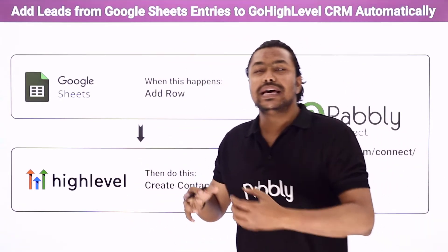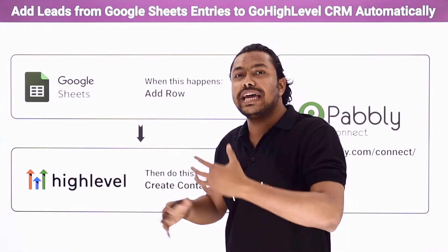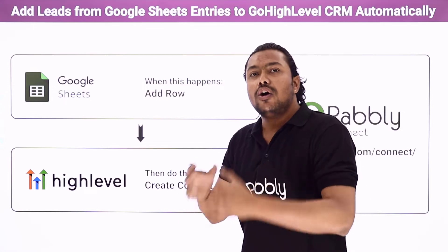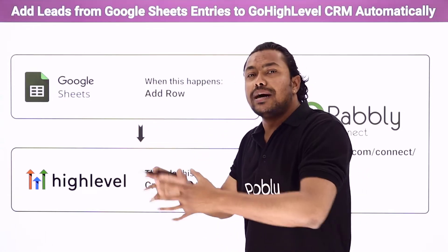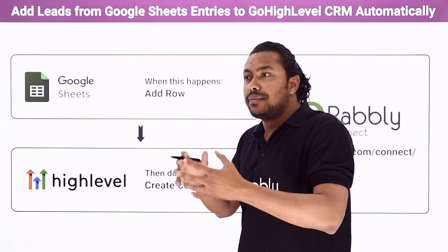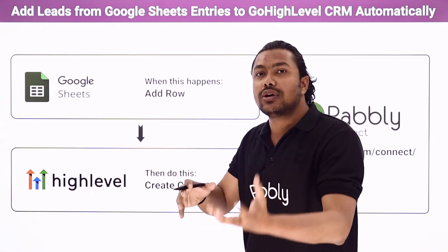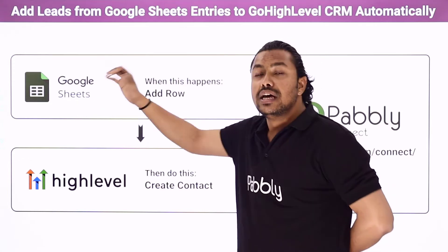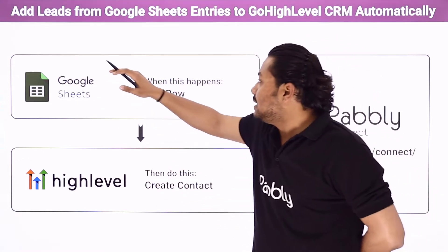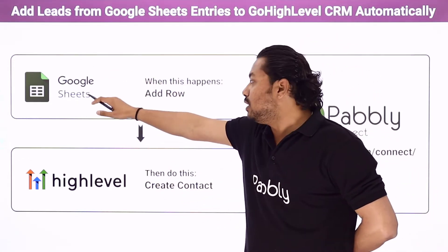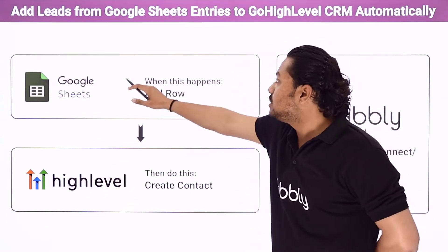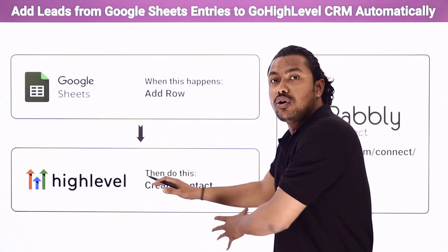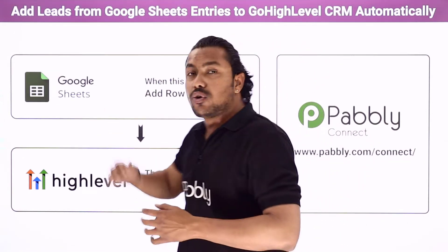Suppose you have been receiving several types of details with the contacts of customers on your Google Sheets, or the employees of your company are making calls, grabbing contacts from different customers, and putting those contacts in Google Sheets. The details from Google Sheets will be used by the GoHighLevel CRM, and those details will automatically go to GoHighLevel CRM and a new contact will be created.